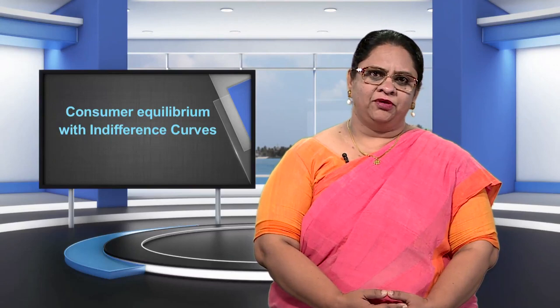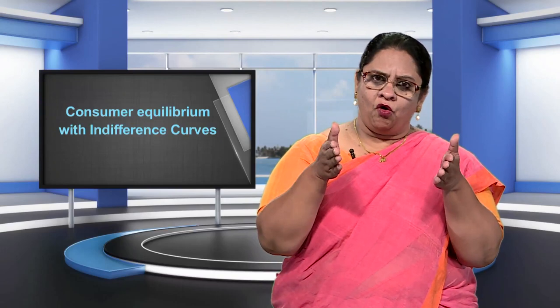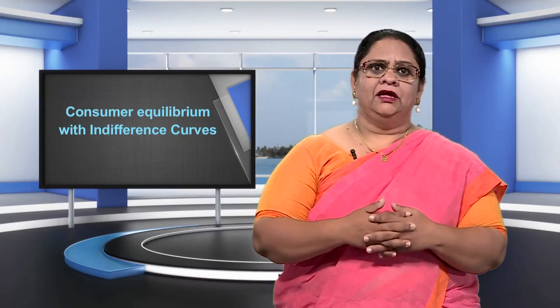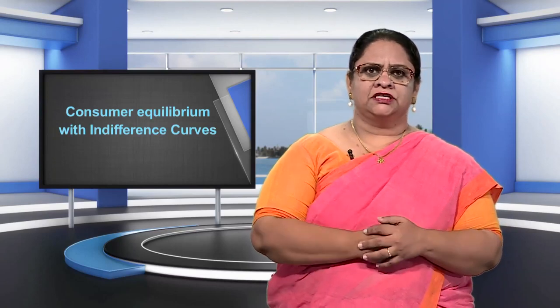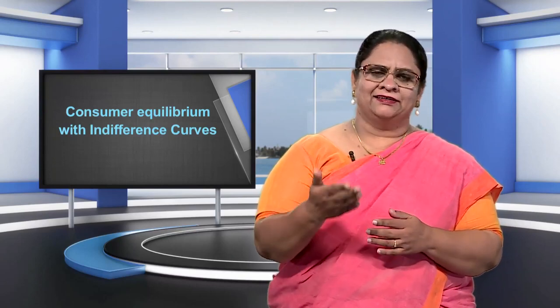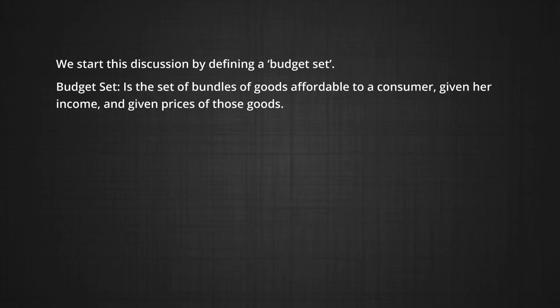As a first step, we assume that a consumer can only spend what she earns. So the amount that she buys depends on her budget or on her income. To be more precise, it depends on the prices of goods available in the market and her income. We start this discussion by defining a budget set — this is a set of bundles of goods affordable to a consumer, given her income and given prices of those goods.